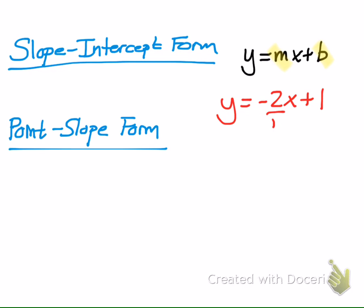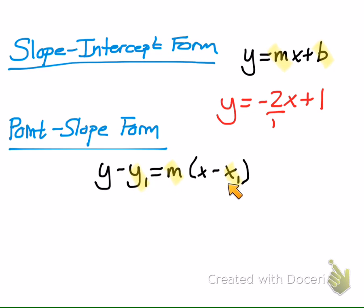Then we have point-slope form. Point-slope form is used when you're given a point and a slope. You plug in your slope, your y-coordinate, and your x-coordinate into the formula. The reason this is useful is because it's very easy to convert from point-slope form to slope-intercept form.